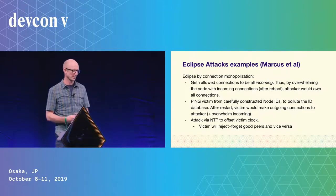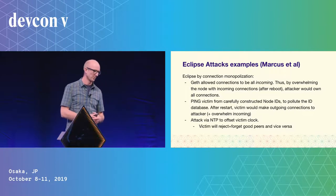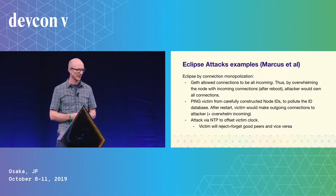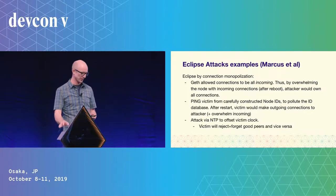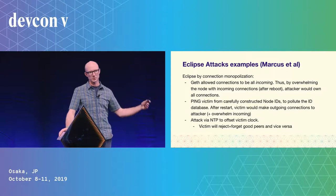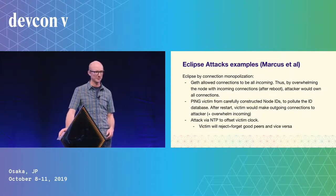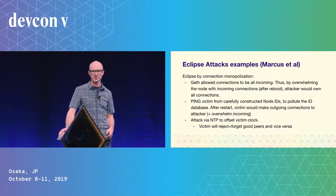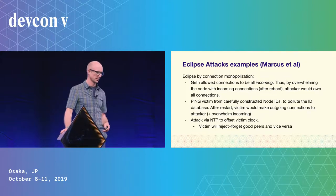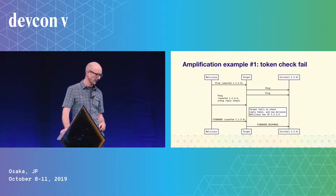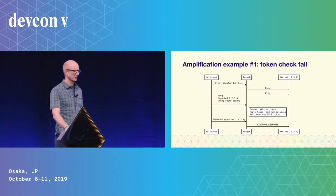Attackers could also fill all connection slots by pinging and polluting the identity database. A third attack found was that if you manage to disturb the timing of a node, other peers will reject it and forget about it, the node will reject other peers, and only the malicious peers will still accept it.